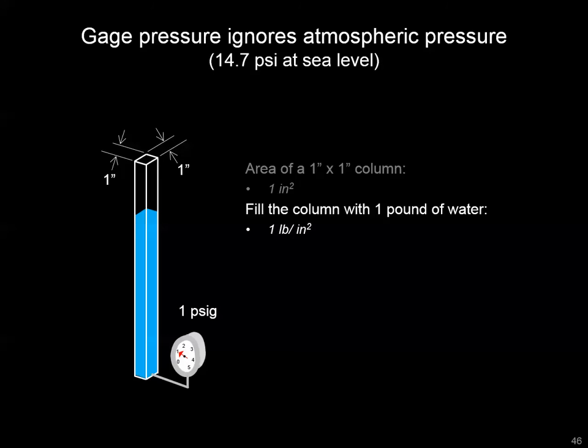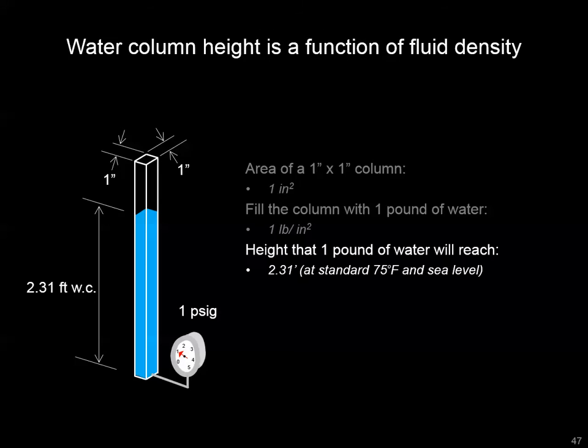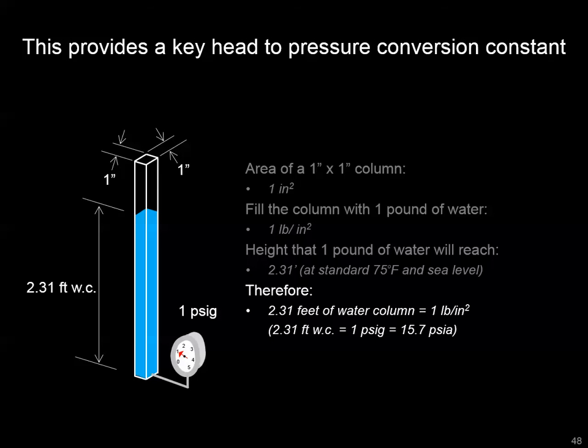We use the term gauge to qualify psi because there's always atmospheric pressure crushing down on the water. At sea level, that's about 15 psi, so gauge pressure ignores that — that's why we say 1 psig, or pound per square inch gauge. Now, if you measure up that column of water, you get 2.31 feet at these ideal conditions. That's the source of the key conversion: 1 psig corresponds to 2.31 feet of water column.